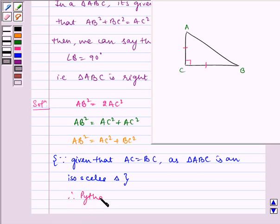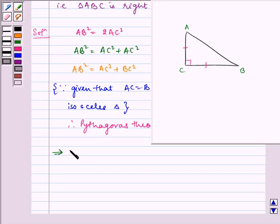Therefore, Pythagoras theorem is satisfied, which implies triangle ABC is a right triangle. Hence proved. I hope you understood the question. Bye and have a nice day.